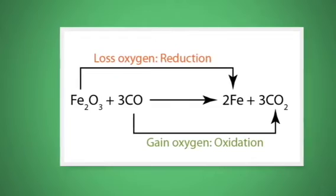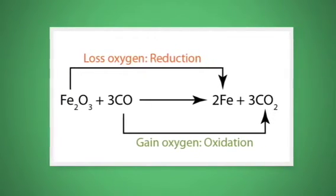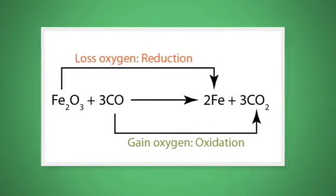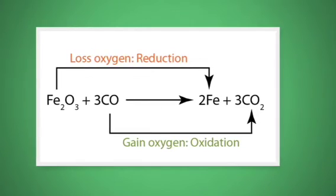In the blast furnace, carbon monoxide, produced by the combustion of carbon, attacks the iron oxide and removes the oxygen atoms. So you end up with molten iron and carbon dioxide given off as a waste product.